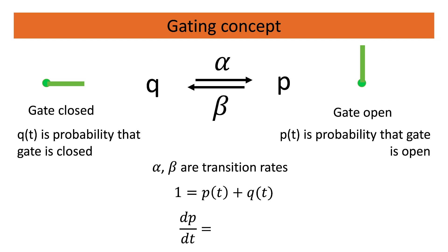If we look at the probability change, for instance dp/dt which is the open probability, we see or we understand that closed gates that open, so Q times alpha, will have a positive impact.